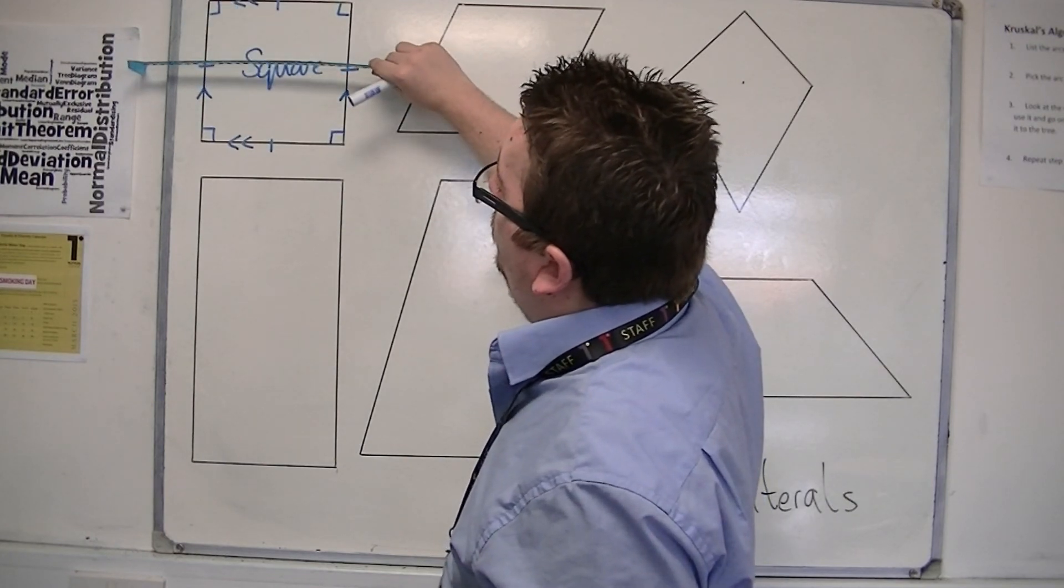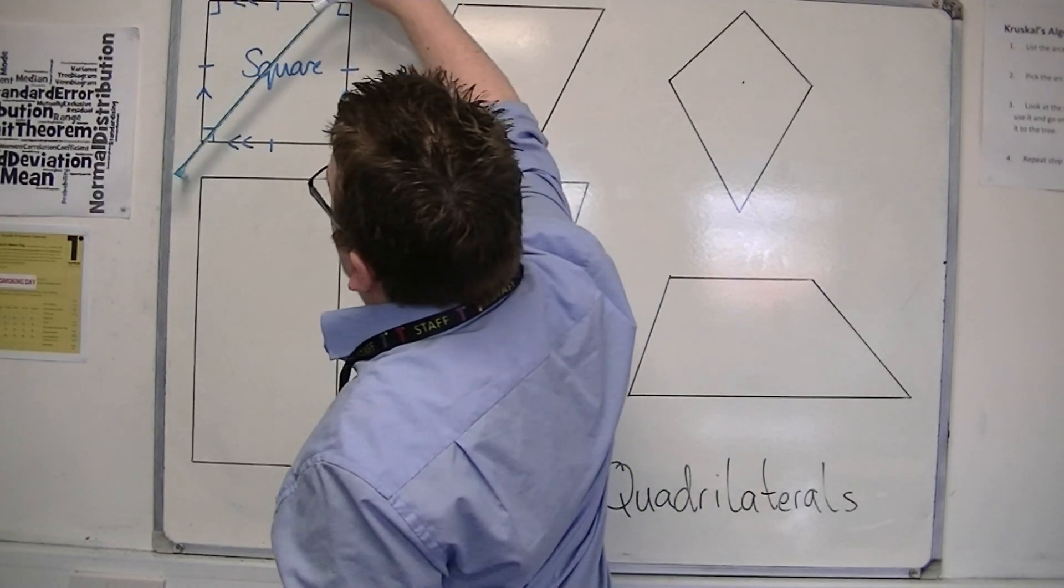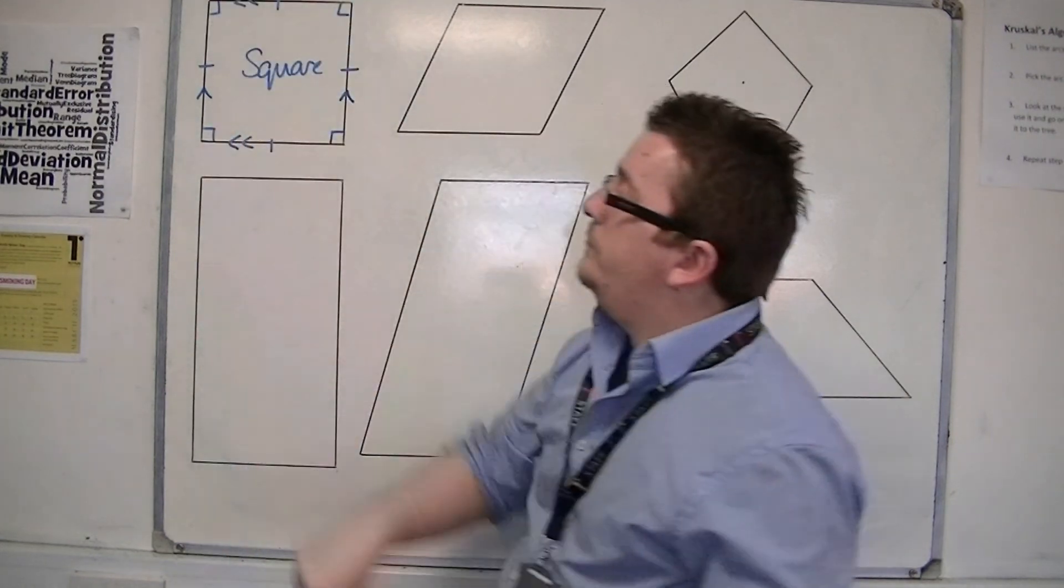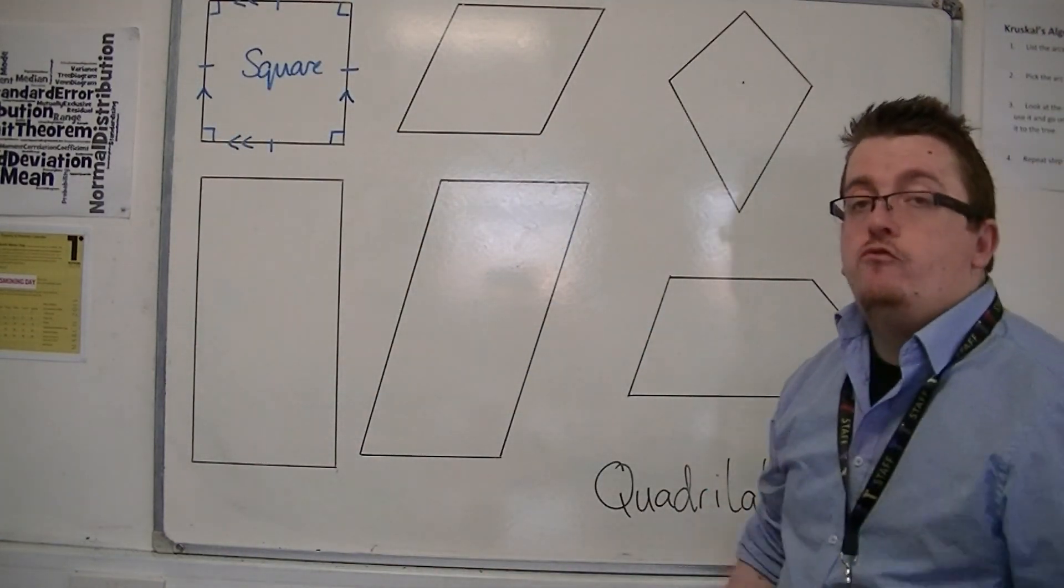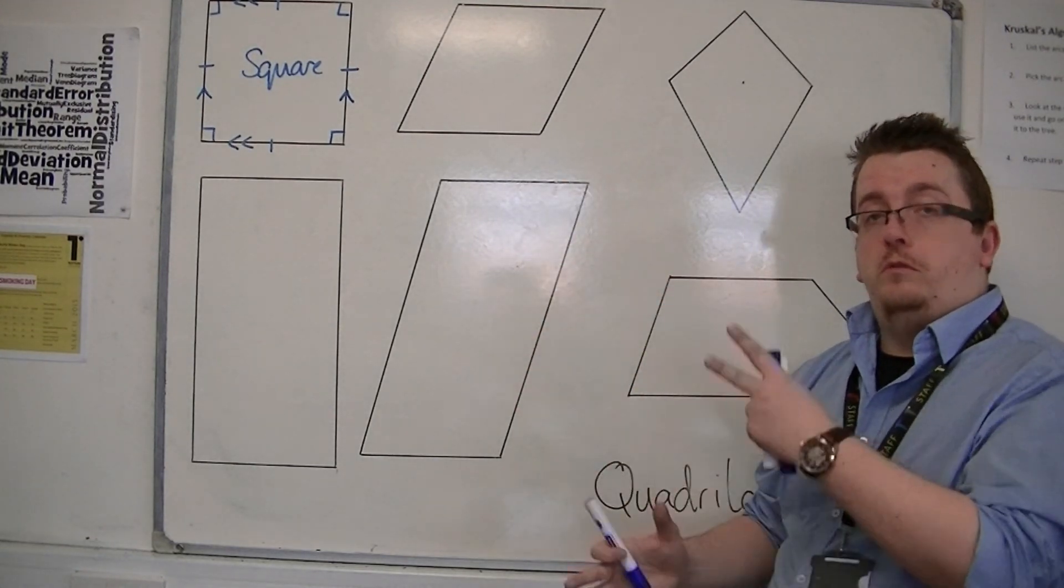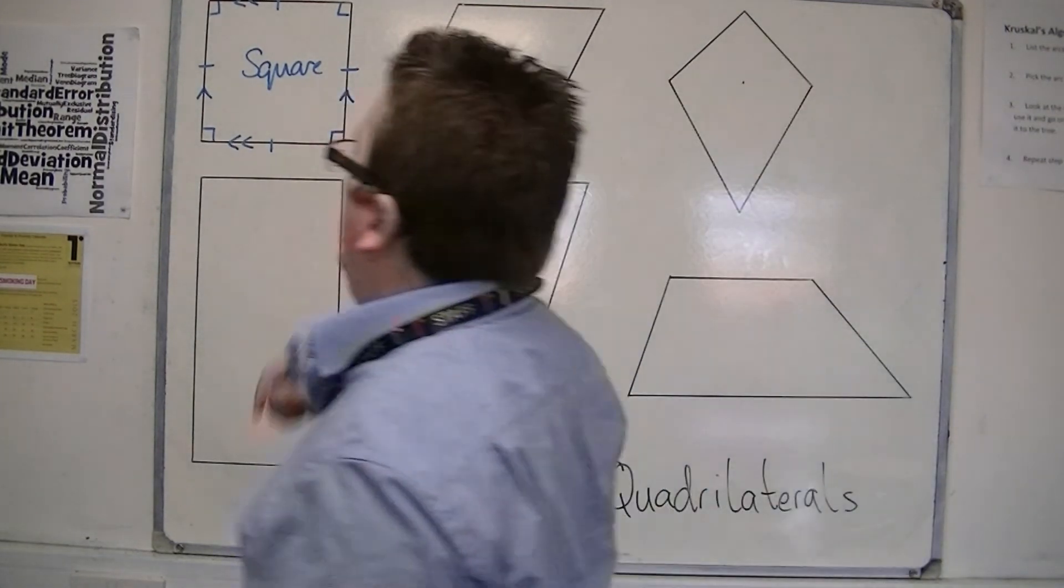And one there, so that's two. Then one there, that would be three. And then one there, that would be four. So it has four lines of symmetry. And it also has a rotational order of four. So that's the square.